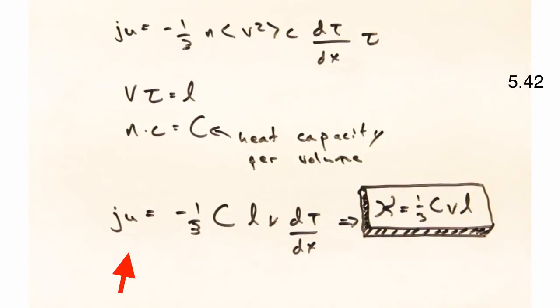What we have now is the energy flux related to the temperature gradient with some coefficients that we can think about, specifically the heat capacity of the system, the mean free path between collisions, and the velocity. And relating back to Fourier's law, this is the thermal conductivity coefficient.